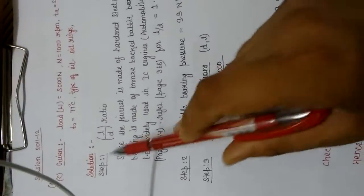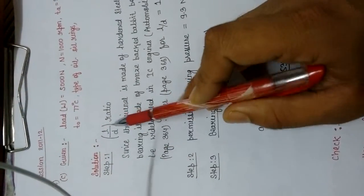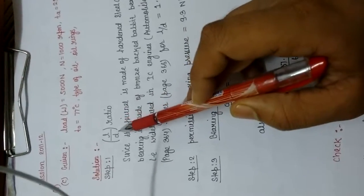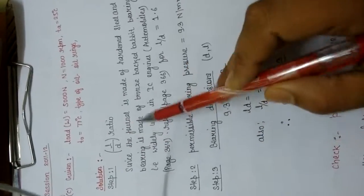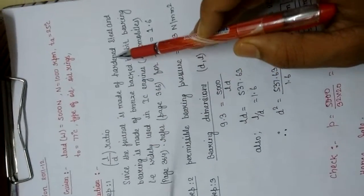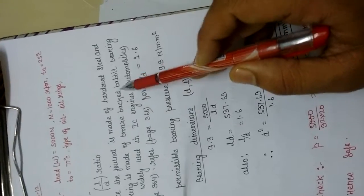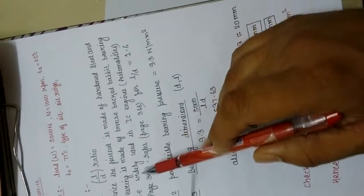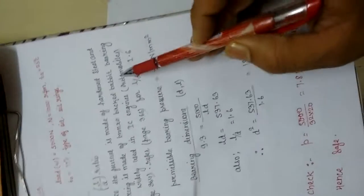Step 1 is to determine the ratio of L by D, where L is the length of the bearing and D is the diameter of the journal or shaft. Both L and D are not given. Since the journal is made of hardened steel and the bearing is made of bronze-backed Babbitt bearing, this type of material is widely used in IC engines, especially in automobiles.